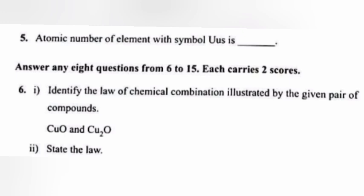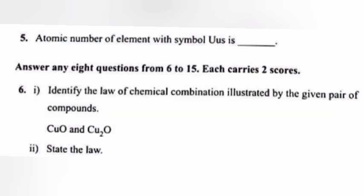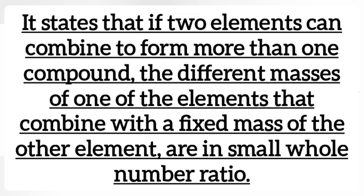Question 6, part 1: Identify the law of chemical combination illustrated by the given pair of compounds. Answer: Law of multiple proportion. Part 2: State the law. Answer: It states that if two elements can combine to form more than one compound, the different masses of one of the elements that combine with a fixed mass of the other element are in small whole number ratio.